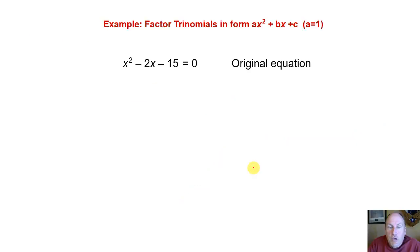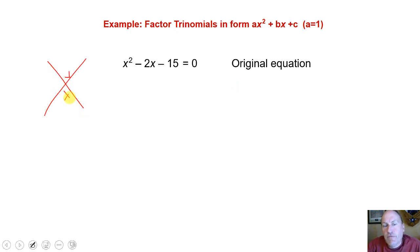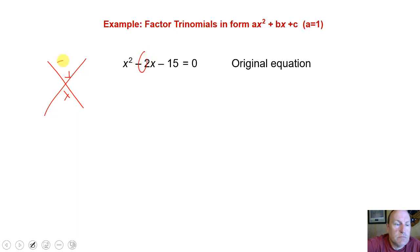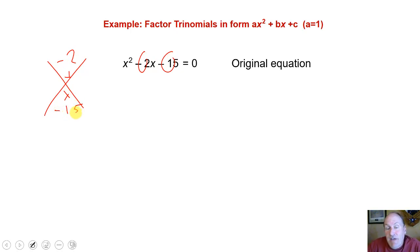Let's practice this. If we have the equation x squared minus 2x minus 15 equals 0, and we want to use this X technique to factor it, we draw an X. We're looking for two terms that are going to add to give us negative 2 and multiply to give us negative 15. So we need to list the factors of negative 15, then find the one that also adds to negative 2.